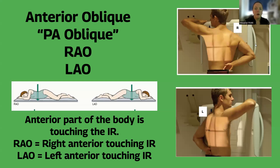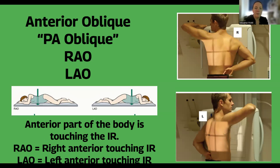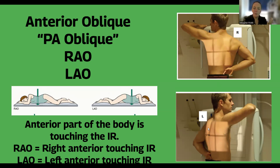Anterior obliques are also referred to as PA obliques — the patient is PA but their anterior is touching the IR. So the names will be RAO or LAO. This patient's right side is touching the IR — that's right anterior oblique versus left anterior oblique where the left is touching. They could be an upright oblique or a recumbent oblique, but the letters are what's important.